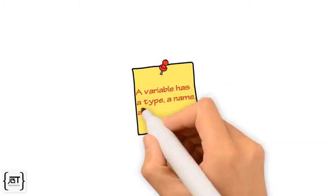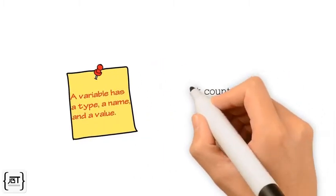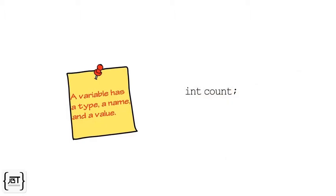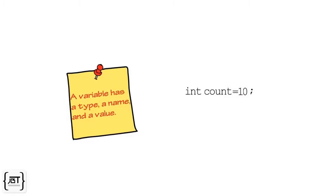A variable has a type, a name and a value. We can declare a variable count of type integer like this. We can also assign it a value of 10 like this.